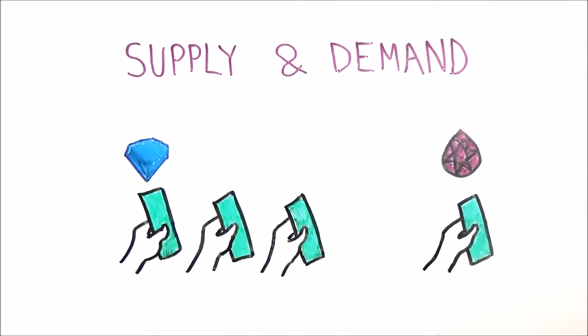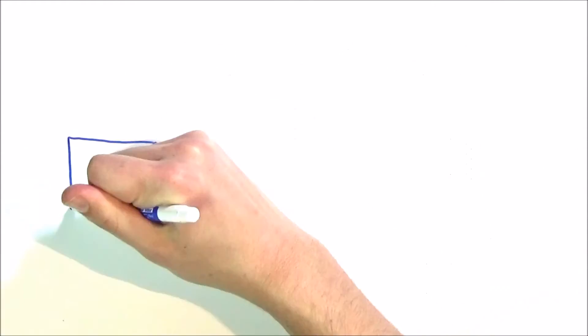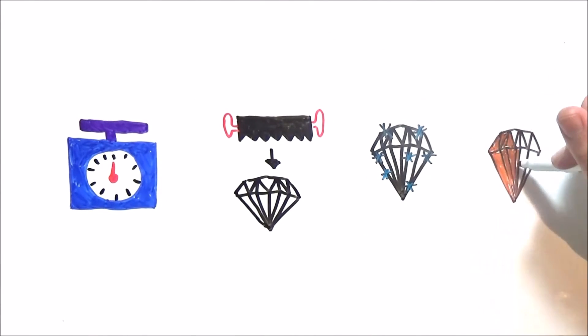The way a diamond's quality is determined is by the four C's: carat weight, cut, clarity, and color, with the most valuable being the largest and most flawless.